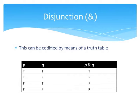If you remember, the ampersand can be completely defined in propositional logic by means of a truth table. So the conjunction is true just in case its two conjuncts are true, and is false otherwise.